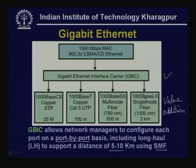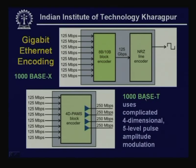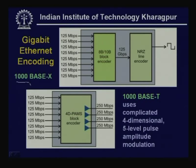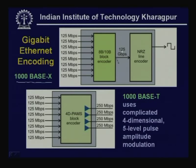Regarding encoding in gigabit Ethernet: for 1000BASE-X (two-wire, copper or optical fiber), 8 bits are received from the reconciliation layer and 8B/10B block encoding is performed, giving a baud rate of 1.25 Gbps. NRZ-I line encoding is then applied. For 1000BASE-T (4-wire category 5 cabling), a very complicated encoding technique is used: 4D-PAM5 (4-dimensional 5-level pulse amplitude modulation). 8 bits are received at 125 Mbps and transmitted over 4 wire pairs.